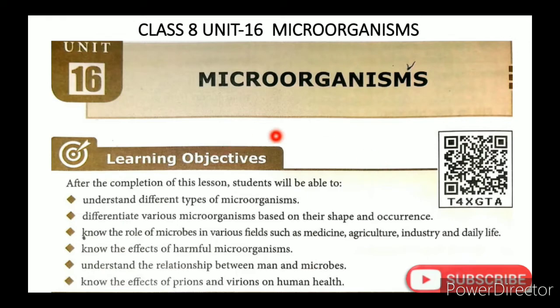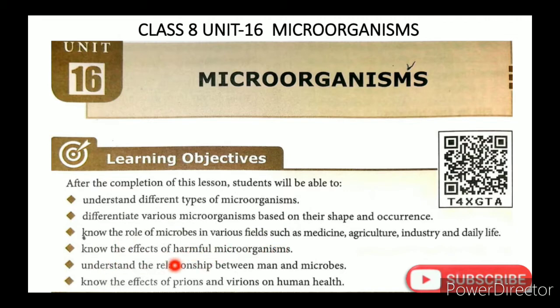In this lesson, the learning objectives are: understand different types of microorganisms; differentiate various microorganisms based on their shape and occurrence; know the role of microbes in various fields such as medicine, agriculture, industry and daily life; know the effects of harmful microorganisms; understand the relationship between man and microbes; know the effects of prions and virions on human health.